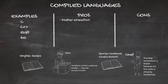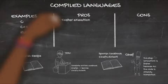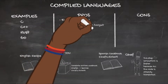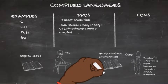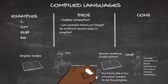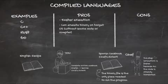Going back to the analogy, you translated the entire cookbook, so at this point the chef just follows the instructions written in his native language. There's nothing else he needs — he's not waiting on anyone else. That brings me to the next point: you can execute that binary file on the target machine without the compiler or source code. You need both to create the executable, but you can run it without them.